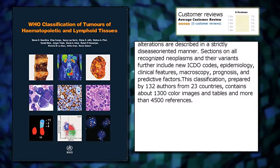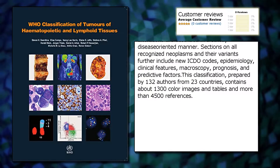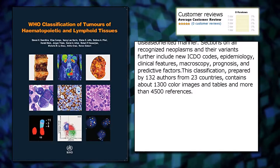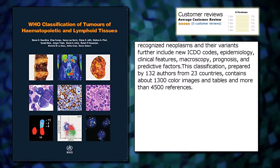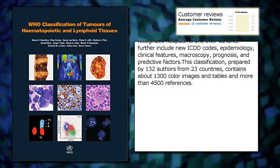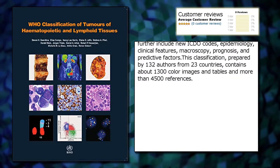This classification, prepared by 132 authors from 23 countries, contains about 1,300 color images and tables and more than 4,500 references.